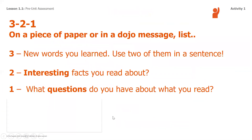Your first assignment is to do a 3-2-1 on a piece of paper or through a Dojo message: write three new words you learned and use two of them in a sentence, two interesting facts you read about, and one question you still have about what you read or something you're wondering.